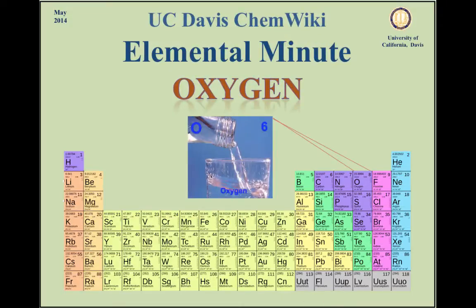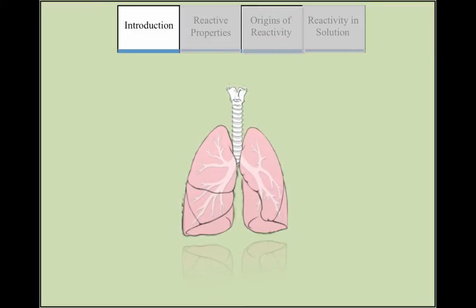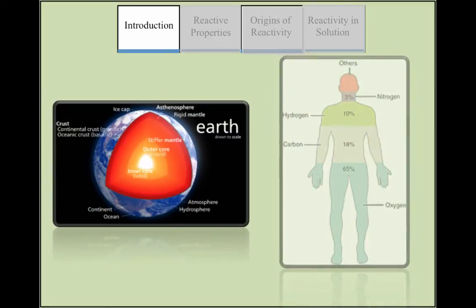Oxygen is one of the most abundant elements in the universe and is found in both living organisms and inorganic compounds. Oxygen is necessary for cellular respiration in most organisms and is the most common element in the Earth's crust and in the human body.